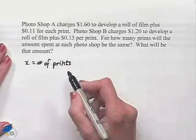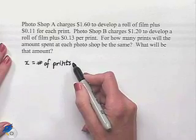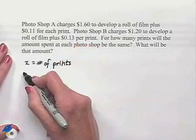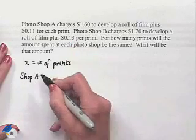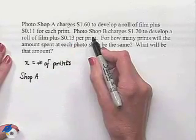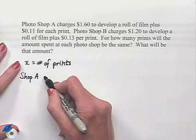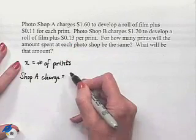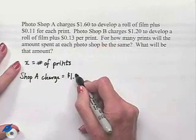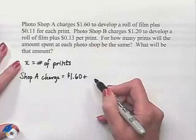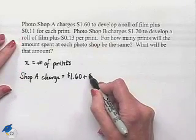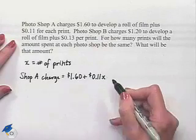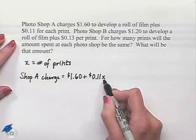Now we're given two more bits of information. One has to do with the charge from Photoshop A. We can put that charge in terms of what's going on with the number of prints. In shop A, the charge is going to be given to us as $1.60 plus 11 cents for each print. That's going to require us to multiply 11 cents times X to give us the number of prints that we're going to be working with.